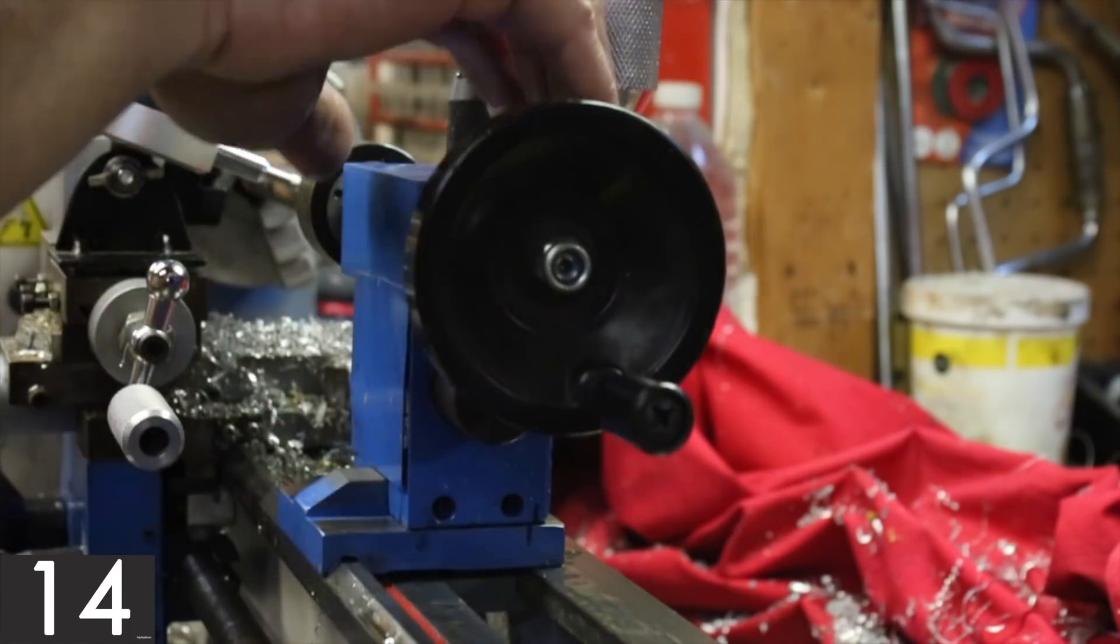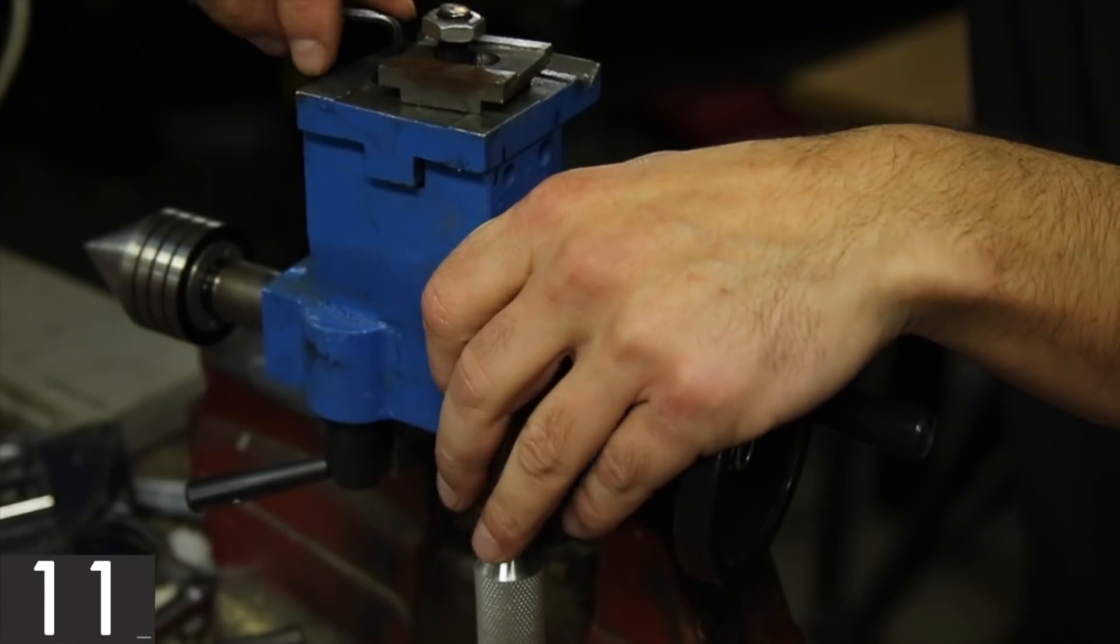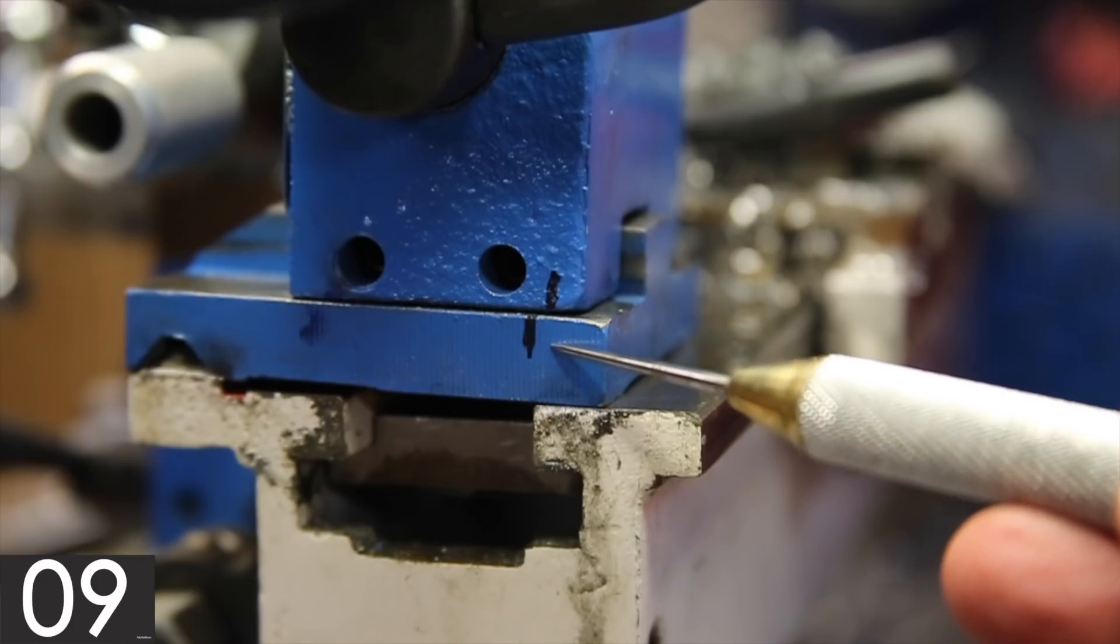Tighten the two screws on the back enough to hold the position. Tighten the screw on the bottom and it turns out my tailstock was pretty far off.